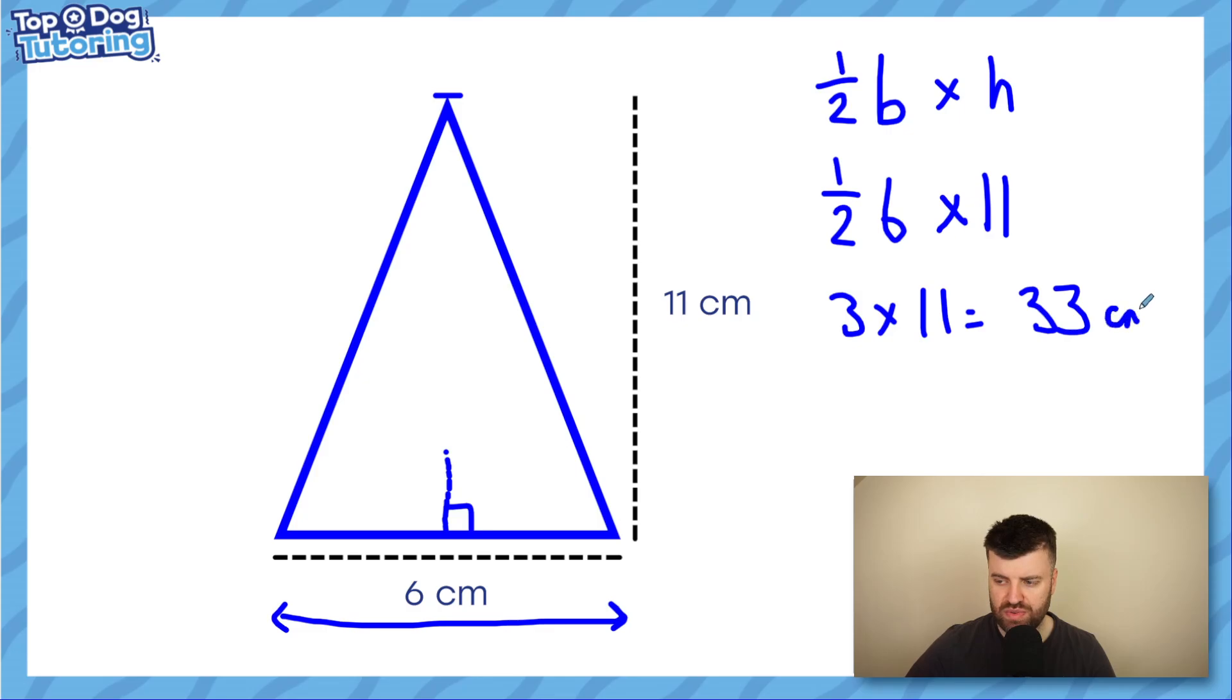And for the units, we'd put centimeters because we're measuring centimeters. And because it's area, we'll put a small two, which is squared. Or you could do the six times 11 first, which is 66, and then half it. Either way, you end up with the same answer of 33 centimeters squared.